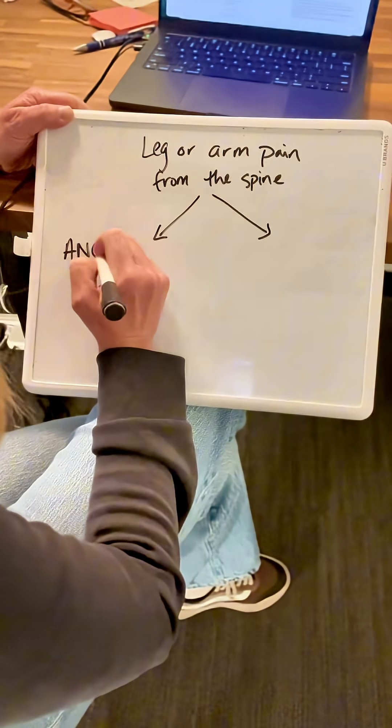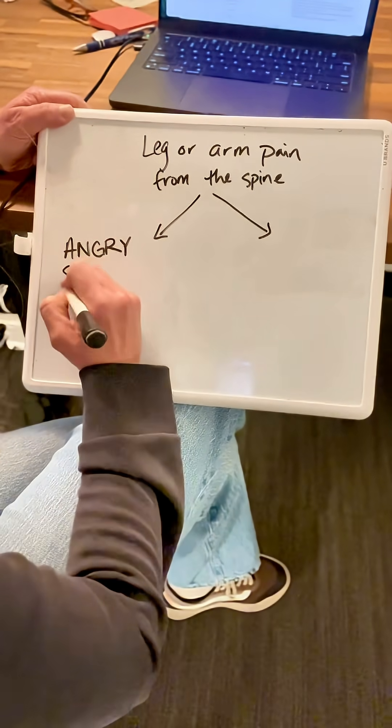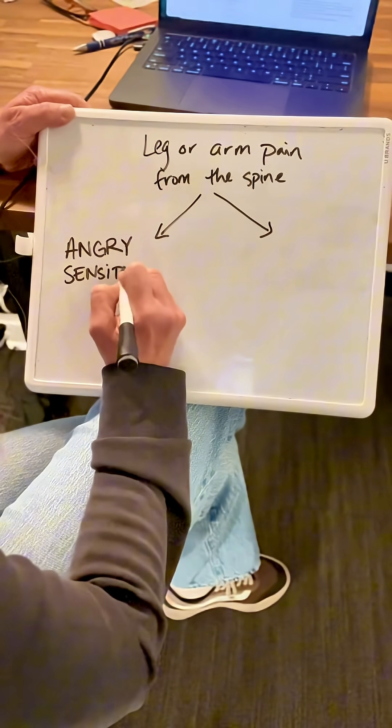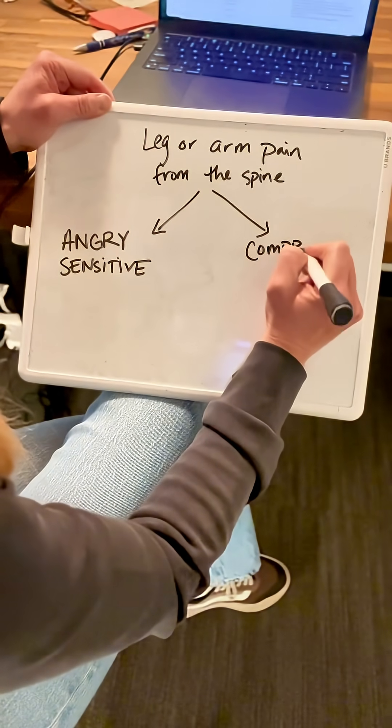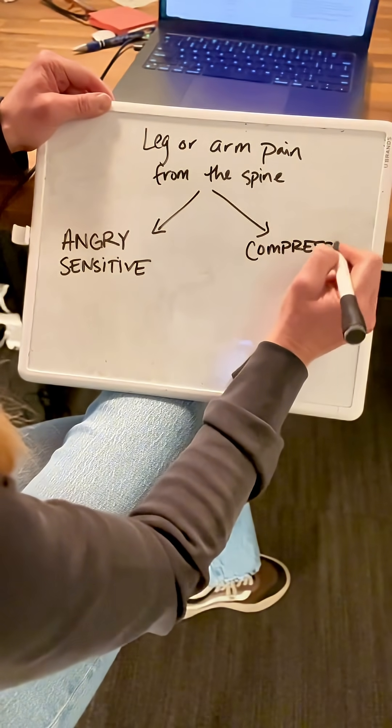One is you have an angry and sensitive nerve, and the other is there might be some compression. An angry and sensitive nerve is what we call radicular pain, and then a compressed nerve is what we call radiculopathy.